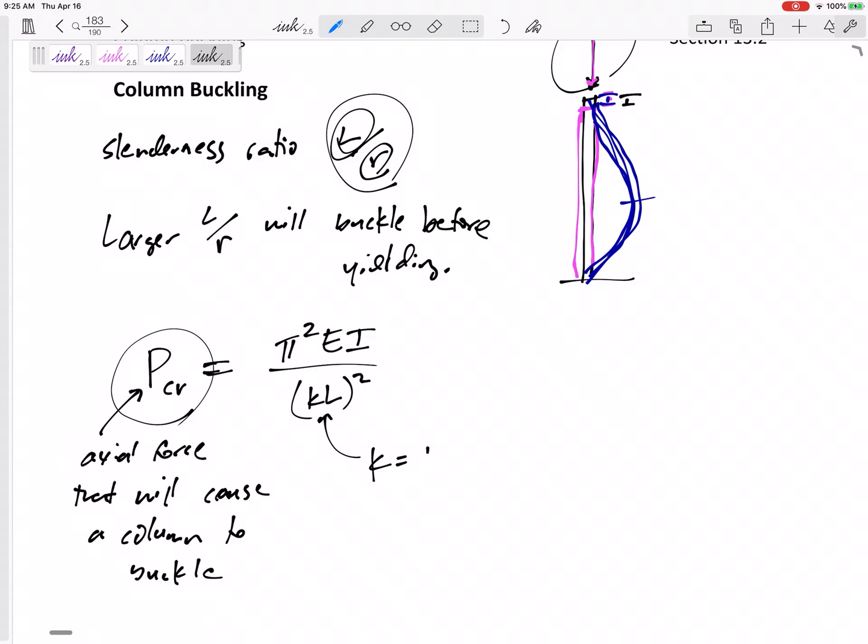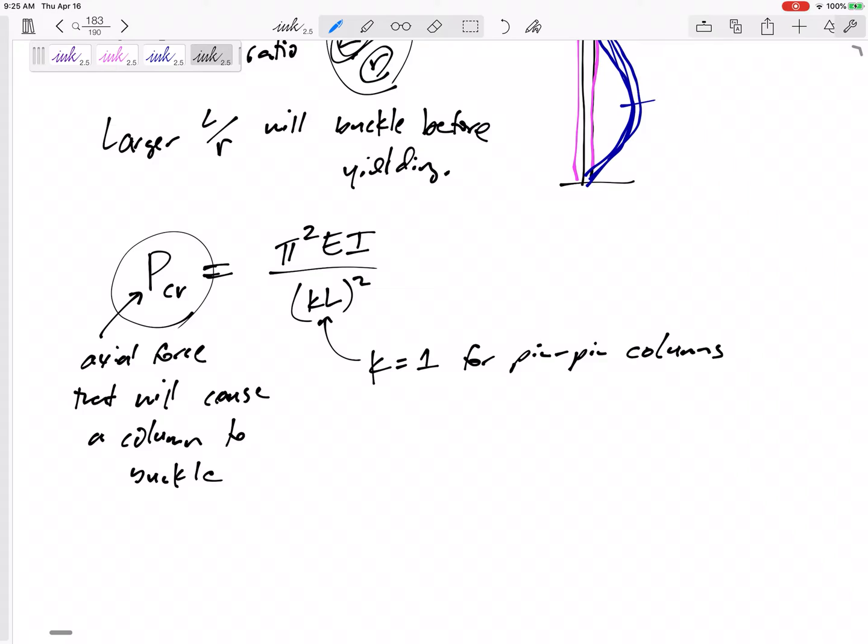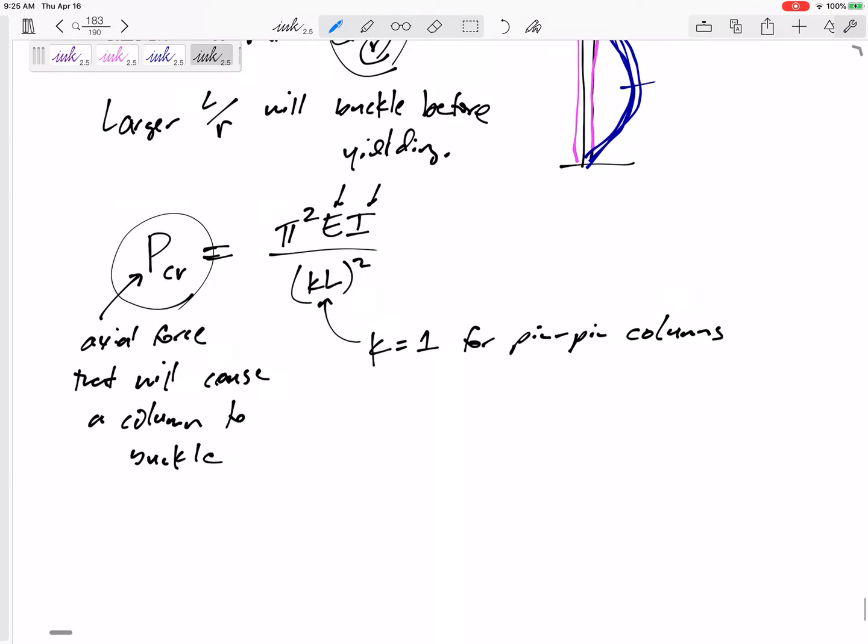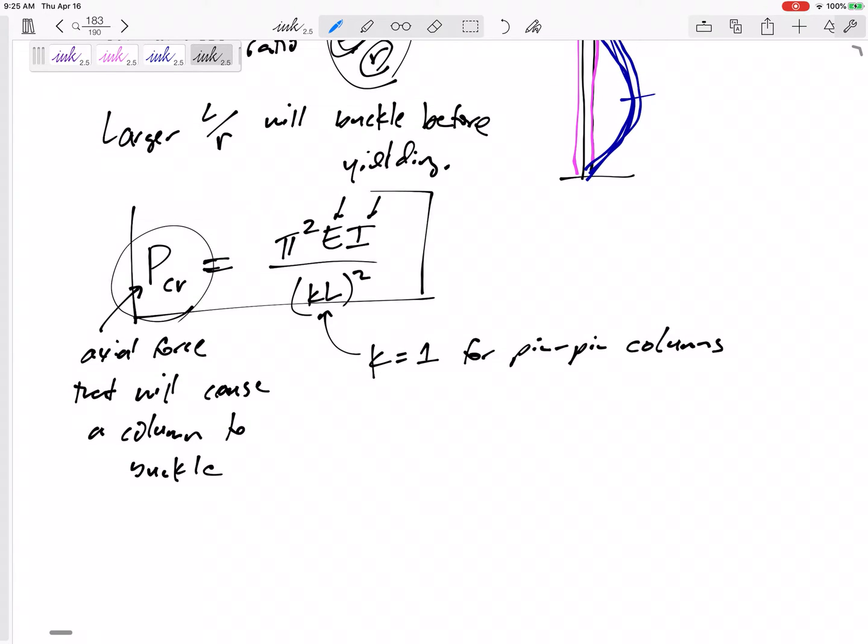For just a minute, this K is one for pinned and pinned columns, and that's what we're going to focus on. So it's really pi squared EI over L squared. Let's put that K in there for just a minute. But the K is one for pinned and pinned columns. So anyway, pi squared E modulus of elasticity. I is the area moment of inertia. It's the shape, the I is kind of a measure of how much area is away from the neutral axis. So there we go.